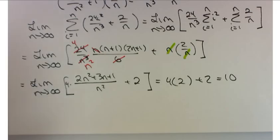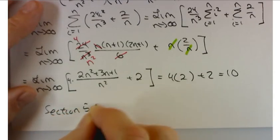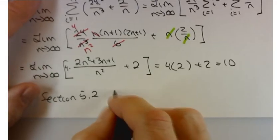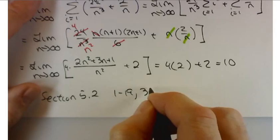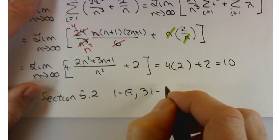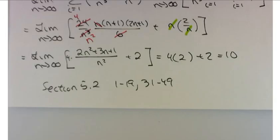So, for homework, section 5.2, try 1 through 19, 31 through 49. Have a great weekend. See ya.